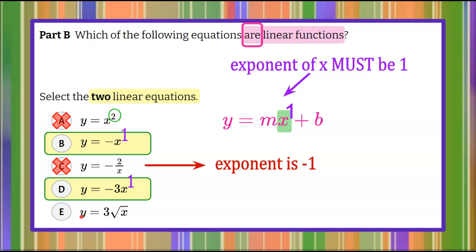And let's look at e, just to make sure. y equals 3 times the square root of x. Well, square root is an exponent of 1 half. So therefore, the exponent of x is 1 half, not 1, ruling out answer choice e.